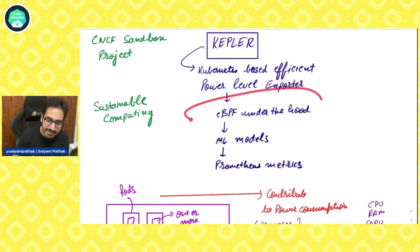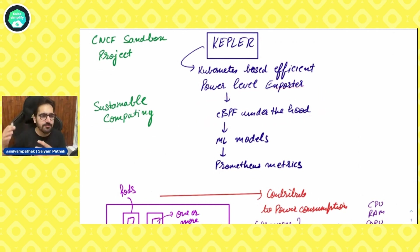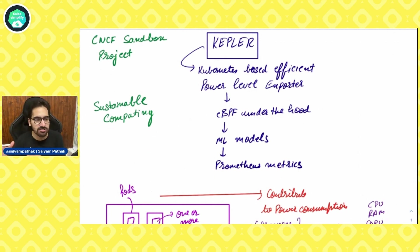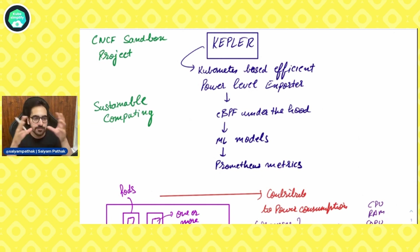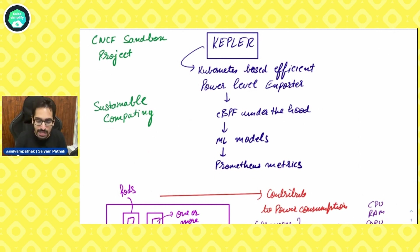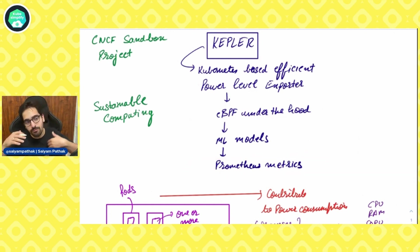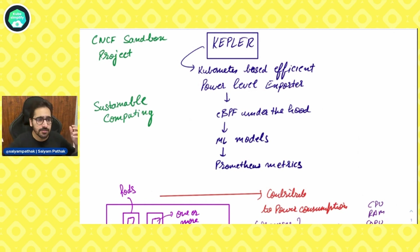After collecting all the data from eBPF about the processes and CPUs, which I'll discuss in the later section of this video, it is fed into machine learning models — linear regression and such — to get the actual useful metrics that are presentable so you can see the energy consumption by the pods. These metrics are in the standard Prometheus format, and you can view them in Grafana dashboards as well.